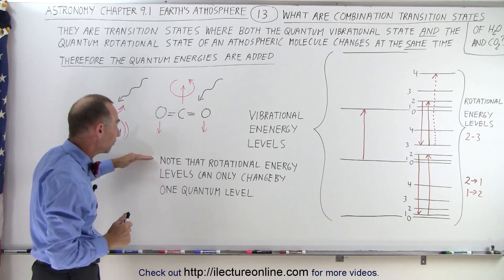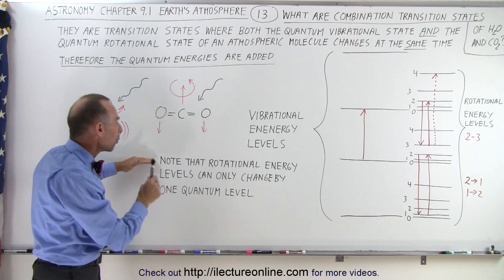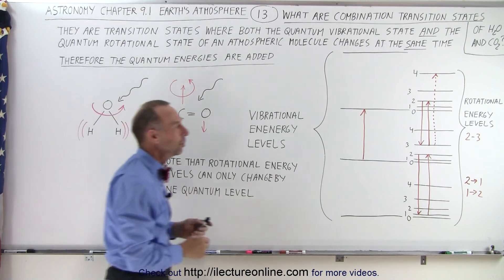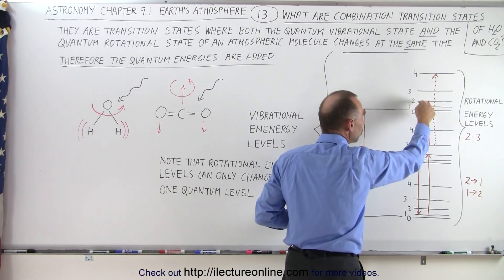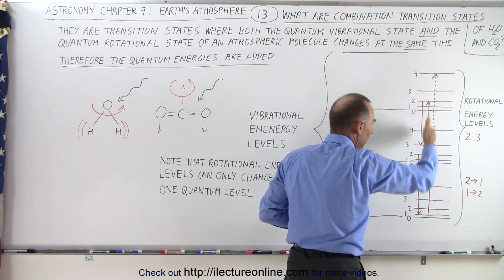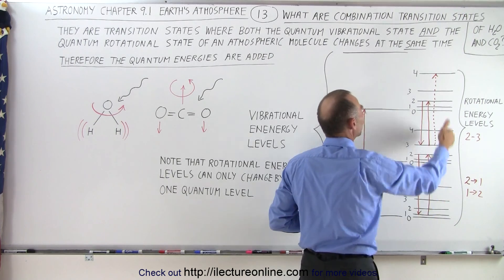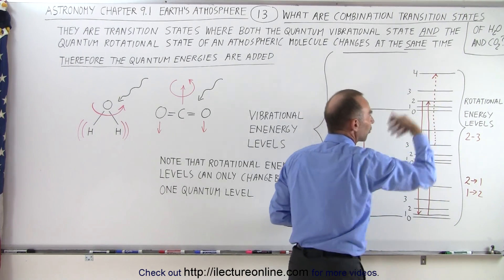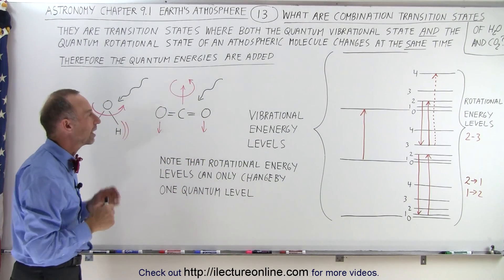Now one note we have to be careful of, that the rotational energy can only change by one quantum level. For example, we can go from two to three, from three to four, depending upon if it goes up or down, but it cannot change by more than one, so it couldn't jump from four to two, from four to one, anything like that. It can only change one rotational energy state at the same time.